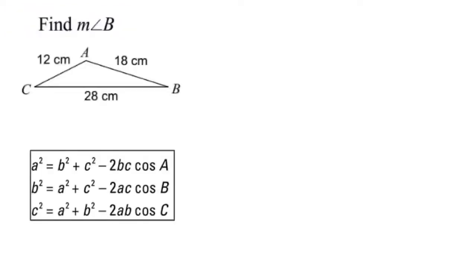For this example, they want us to find the measurement of angle B. Previously we talked about the law of sine, and with the law of sine you needed to know an angle and the opposite side. I don't know B, I don't know A, and I don't know C, so I don't know any of my angles. So I can't use the law of sines — that's how I know I'm going to use the law of cosine.